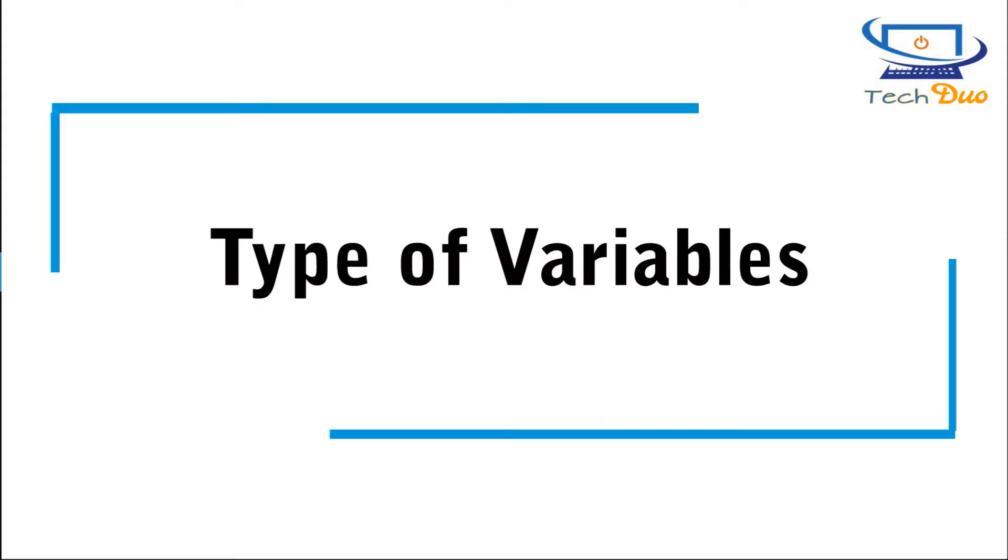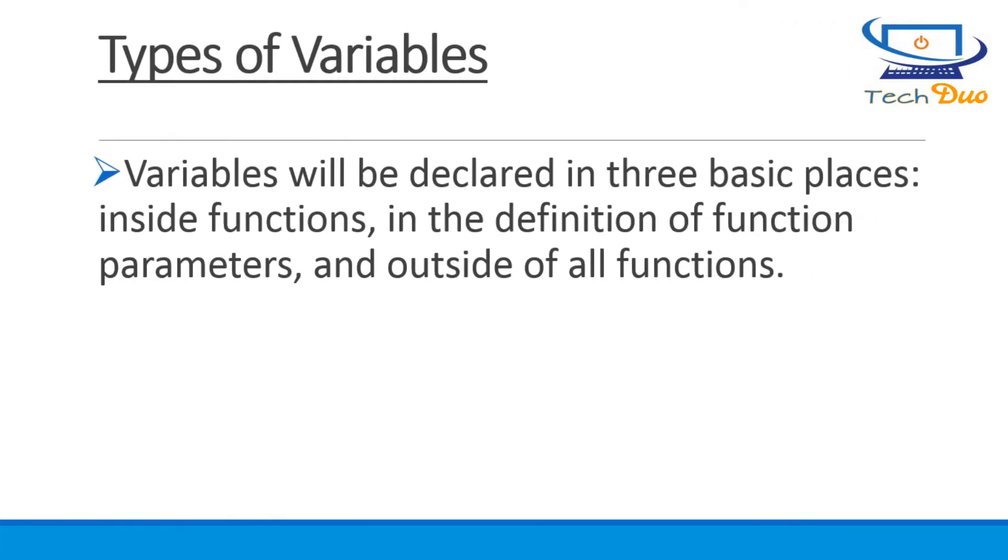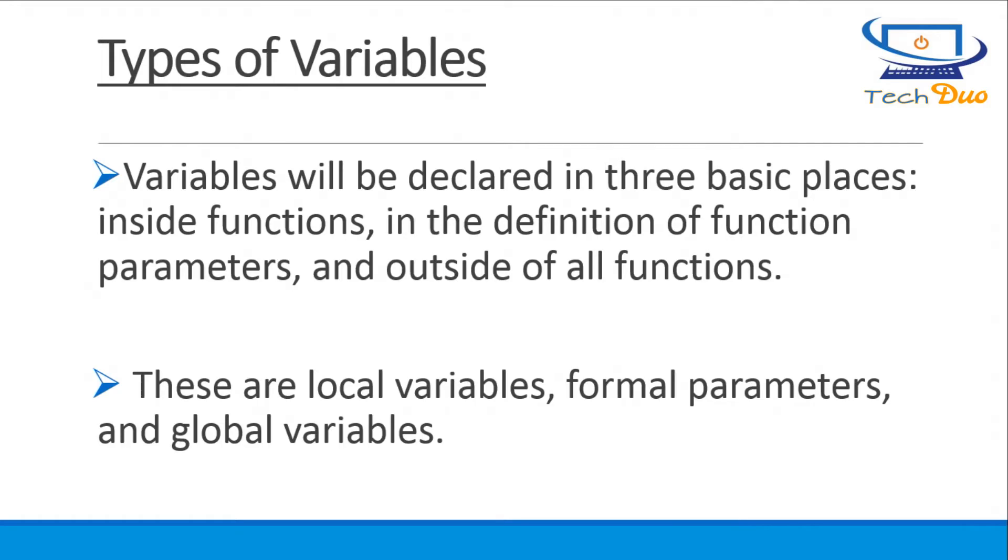Types of variables. Variables will be declared in three basic places: inside functions, in the definition of function parameters, and outside of all functions. These are local variables, formal parameters, and global variables.